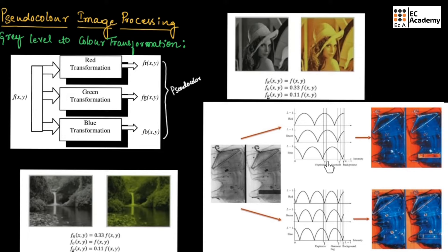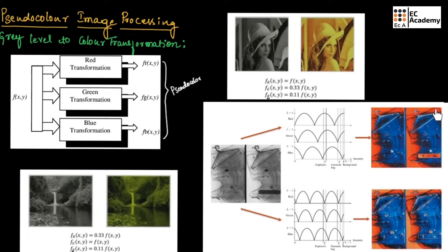To identify the explosive, coding is done such that the value of the red channel is higher compared to the other two transformations. That is why the explosive appears as red in color. The background in the baggage is coded with the same transformation as the explosive, which is why the background also appears red. The garment in the bag is coded so that it appears as blue color.